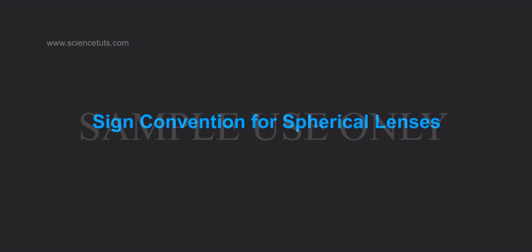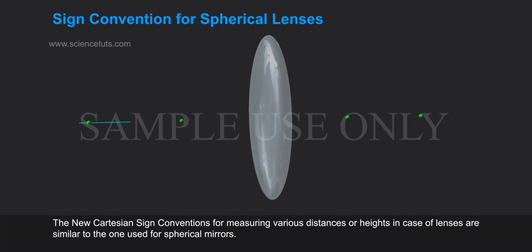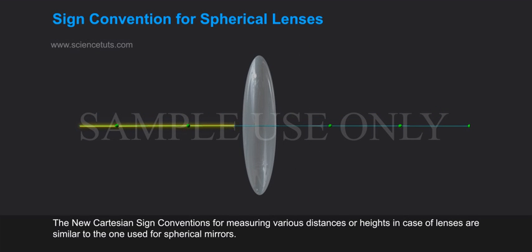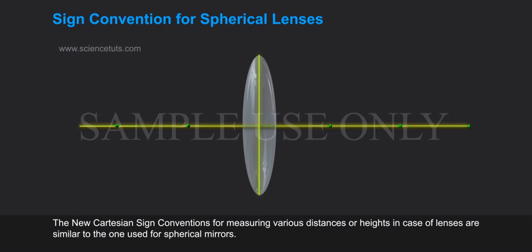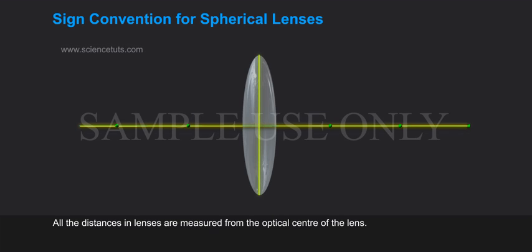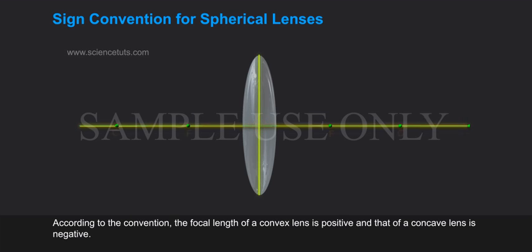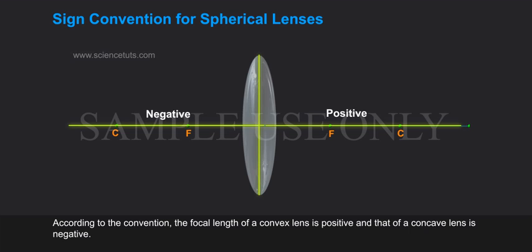Sign Convention for Spherical Lenses. The new Cartesian sign conventions for measuring various distances or heights in case of lenses are similar to the one used for spherical mirrors. All the distances in lenses are measured from the optical center of the lenses. According to the convention, the focal length of a convex lens is positive and that of a concave lens is negative.